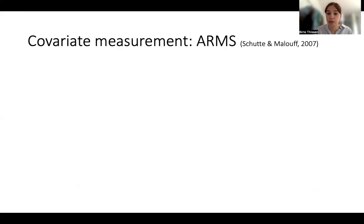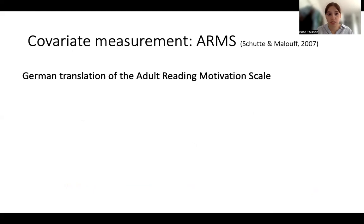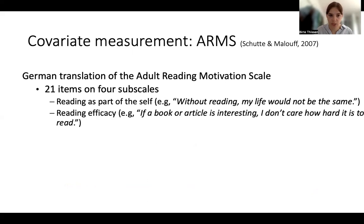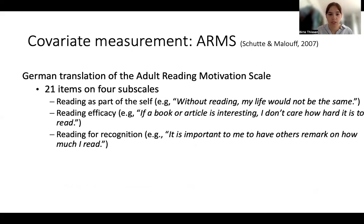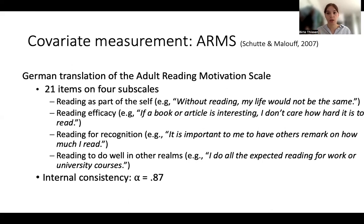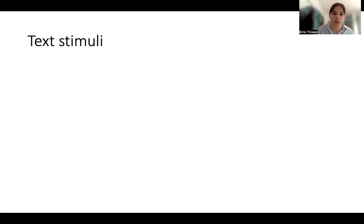The other covariate was general reading motivation, measured using the German translation of the Reading Motivation Scale, which has 21 items on four subscales: reading as part of the self, reading efficacy, reading for recognition, and reading to do well in other realms. Because internal consistency was quite high at 0.87, and because some items belong to more than one subscale, we calculated a joint reading motivation score.